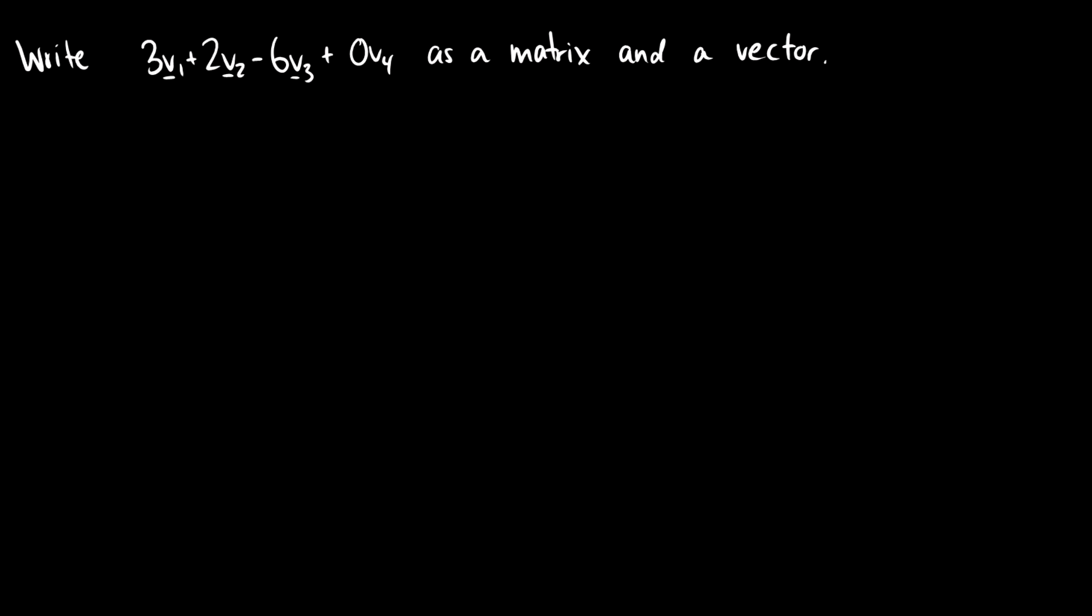Here's another way of doing things. We can reverse engineer our matrix vector products. Sometimes we want to go backwards. So I have 3v1 plus 2v2 minus 6v3 plus 0v4, and I want to represent this as a matrix and a vector.